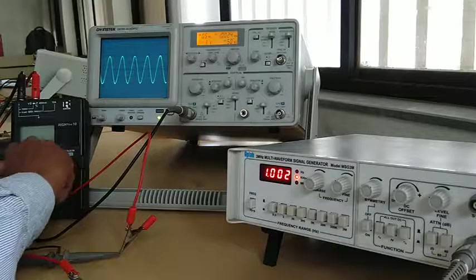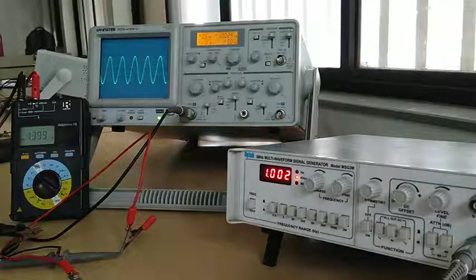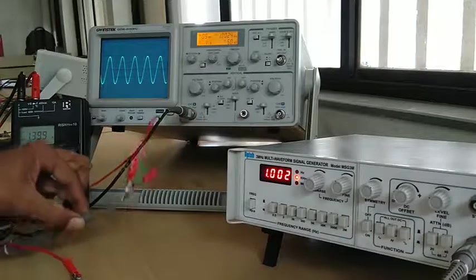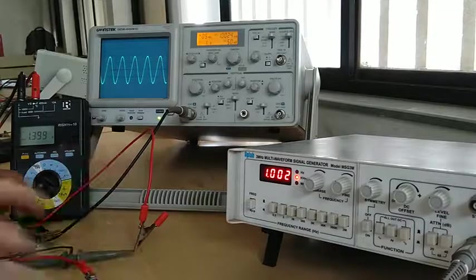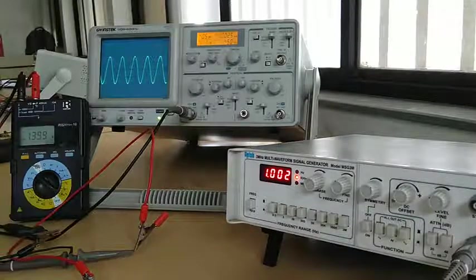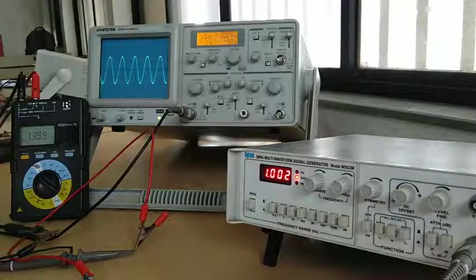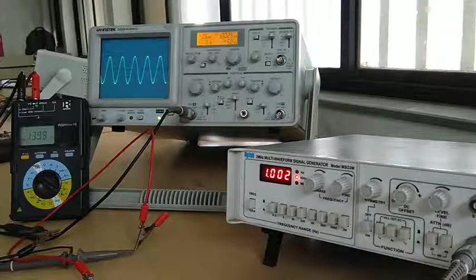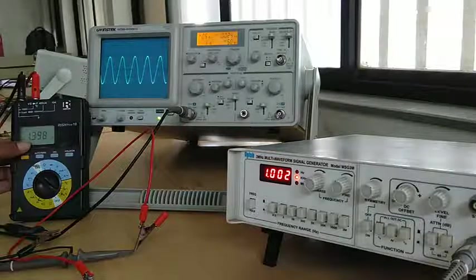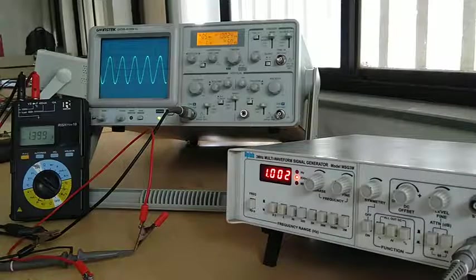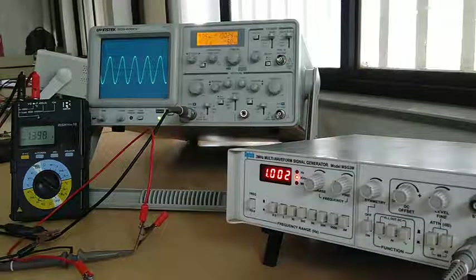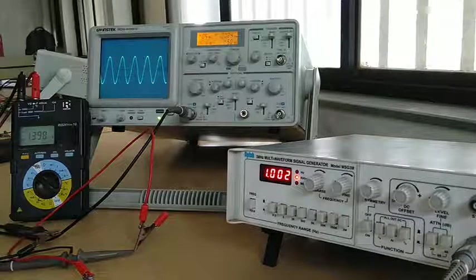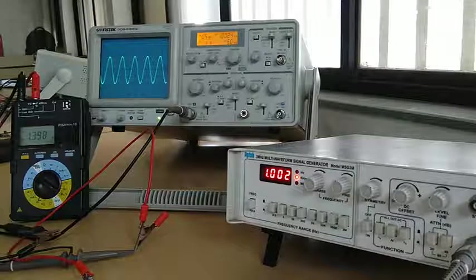First, I will switch on the DMM. I have switched it to AC voltage mode and simultaneously connected both the CRO and the DMM to the function generator. Now I will start the measurement. The first column in the observation table will be the actual RMS voltage. From the DMM display, it is reading 1.398. So I will convert 1.398 RMS into peak-to-peak voltage so that later we can compare in terms of percentage error in the measurement.